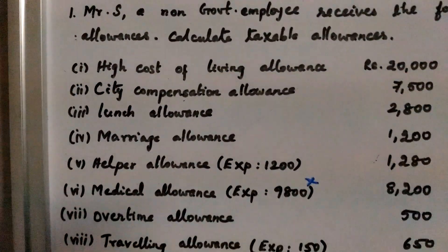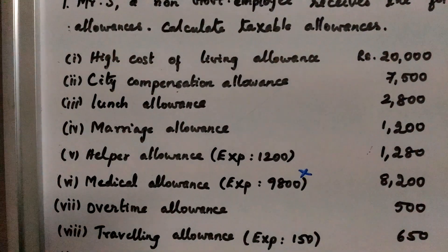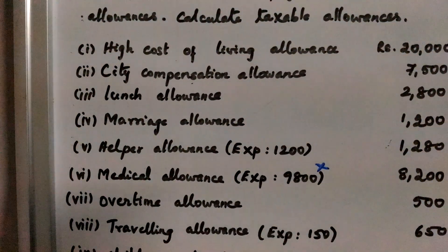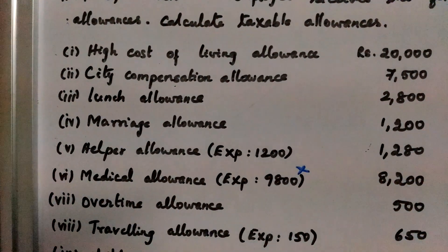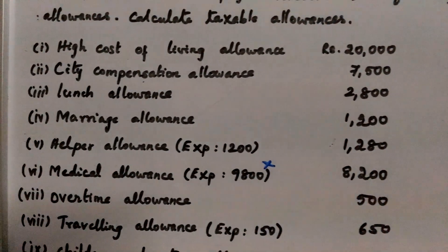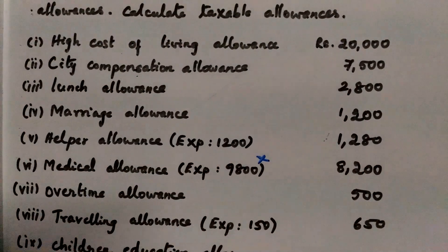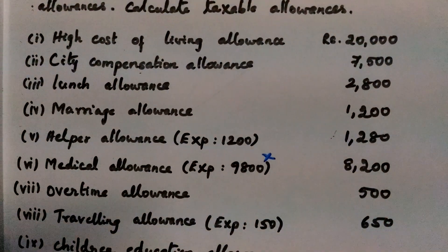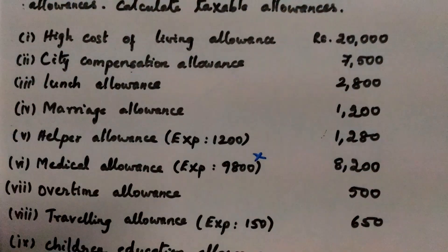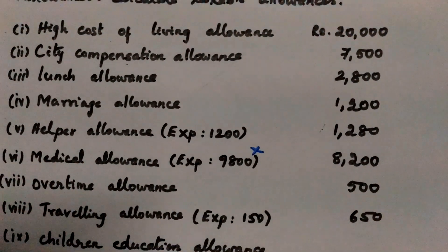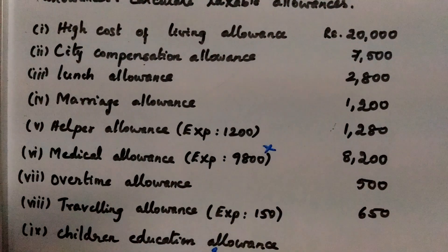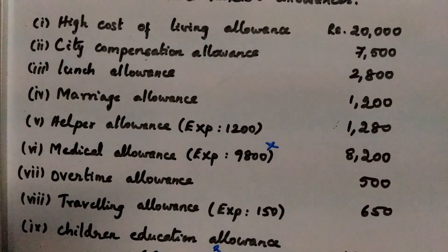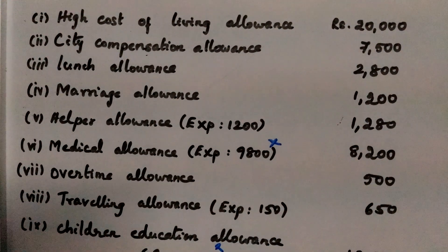High Cost of Living Allowance: $20,000. City Compensation Allowance: $7,500. Lunch Allowance: $2,800. Marriage Allowance: $1,200. Helper Allowance: $1,280.